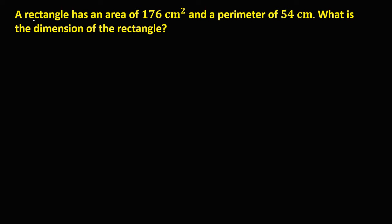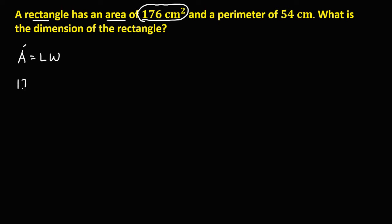Since the given is a rectangle and we have this area, the formula for the area of a rectangle is length times the width. Since we have the given area of 176 cm squared, therefore 176 equals length times width. This is equation number 1.